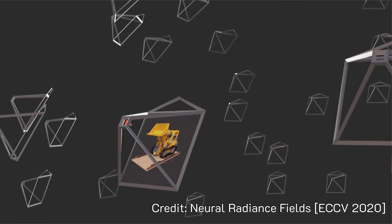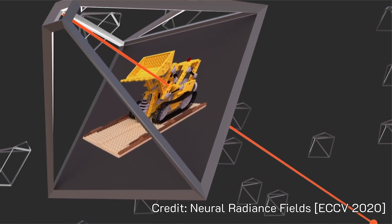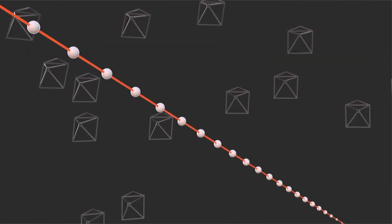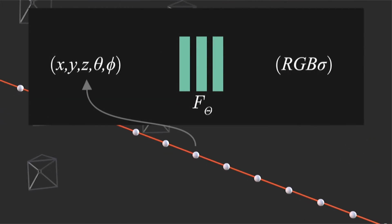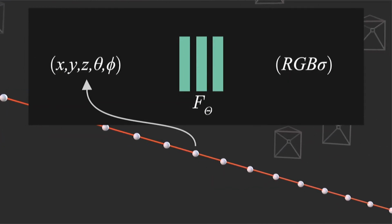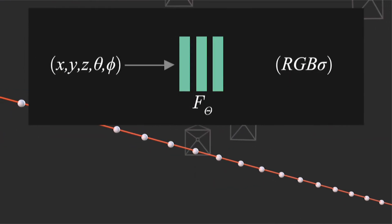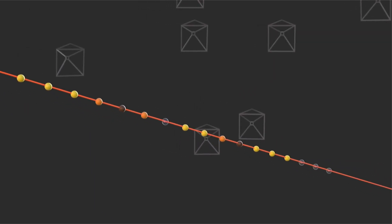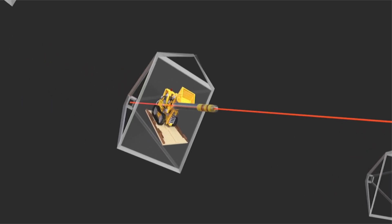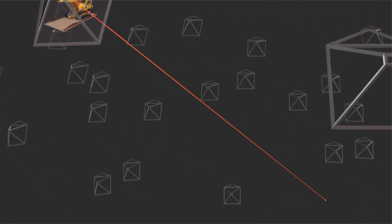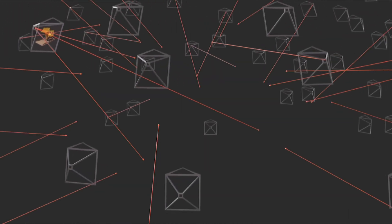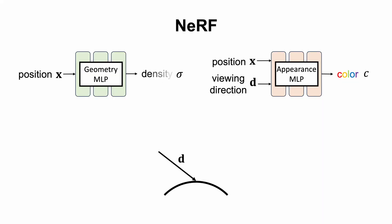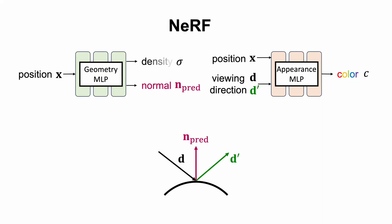Let's begin with the ideal situation where all the input images are captured under consistent illumination. In this situation, we can represent the scene as a 5-dimensional function that maps the 3D location and viewing direction to color and density. Since the rendering is differentiable, we can optimize the parameters of this function by minimizing the difference between the rendered and captured images. Building upon a NeRF formulation, we can further improve its ability to model view-dependent appearance by predicting surface normals and ray tracing.